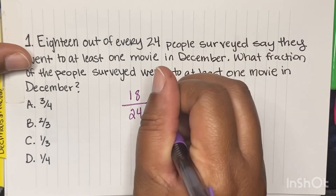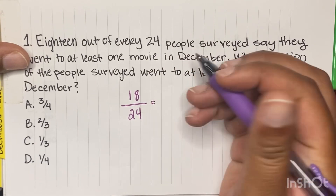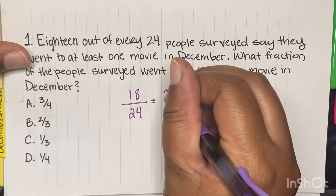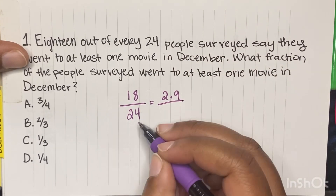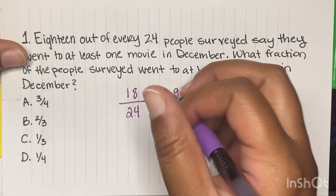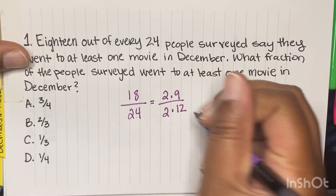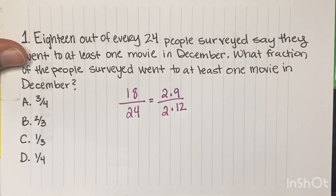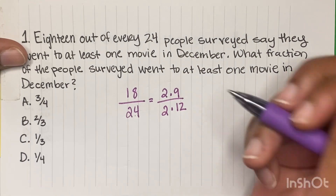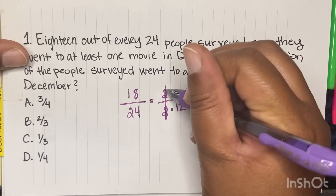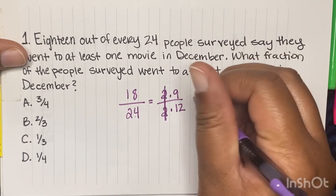If you're not good at that, just ask yourself: what times what gives you 18? Well, 2 times 9 does. And then what times what gives you 24? 2 times 12. So we can cancel out these twos and now we have 9 over 12.